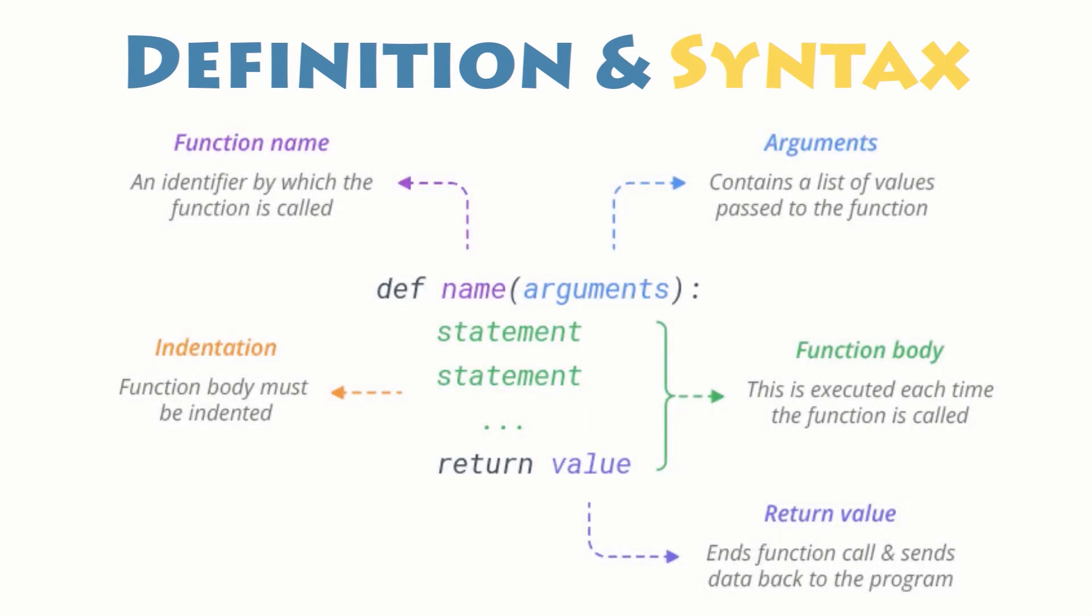The basic syntax for a Python function definition is as follows. The keyword def marks the start of the function header. The function name uniquely identifies the function throughout your program. Optional parameters, also called arguments, through which you pass values to a function. A colon to mark the end of the function header.